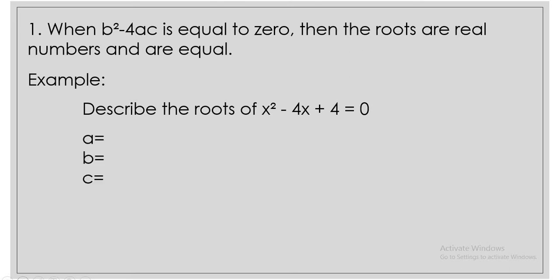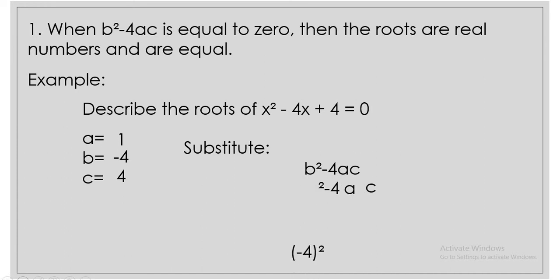The first step is to find the value of a, b, and c, which is a is 1, b is negative 4, and c is 4. The next step is to substitute the values into the discriminant, which is b squared minus 4ac. The value of b is negative 4, the value of a is 1, and the value of c is 4.